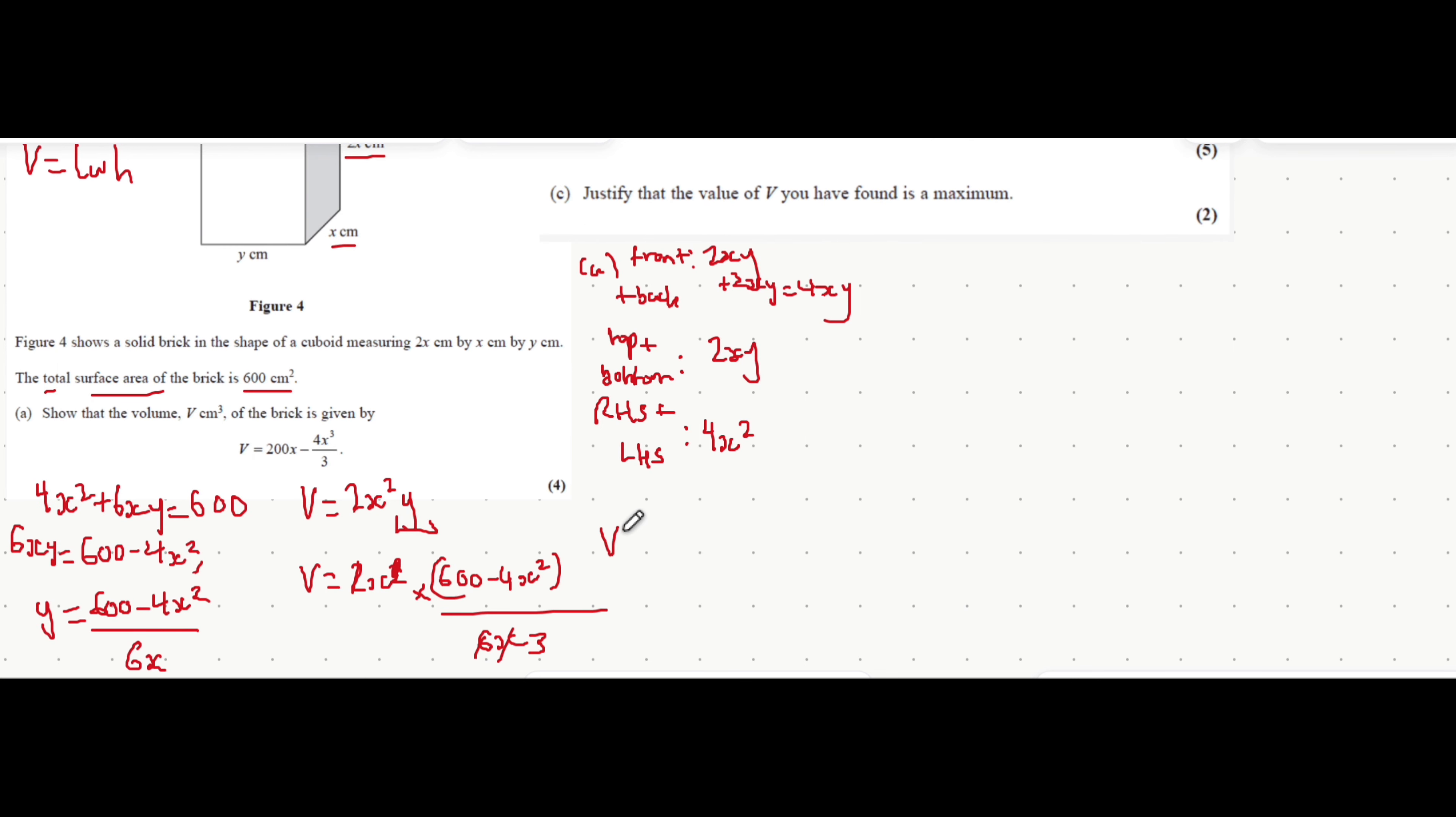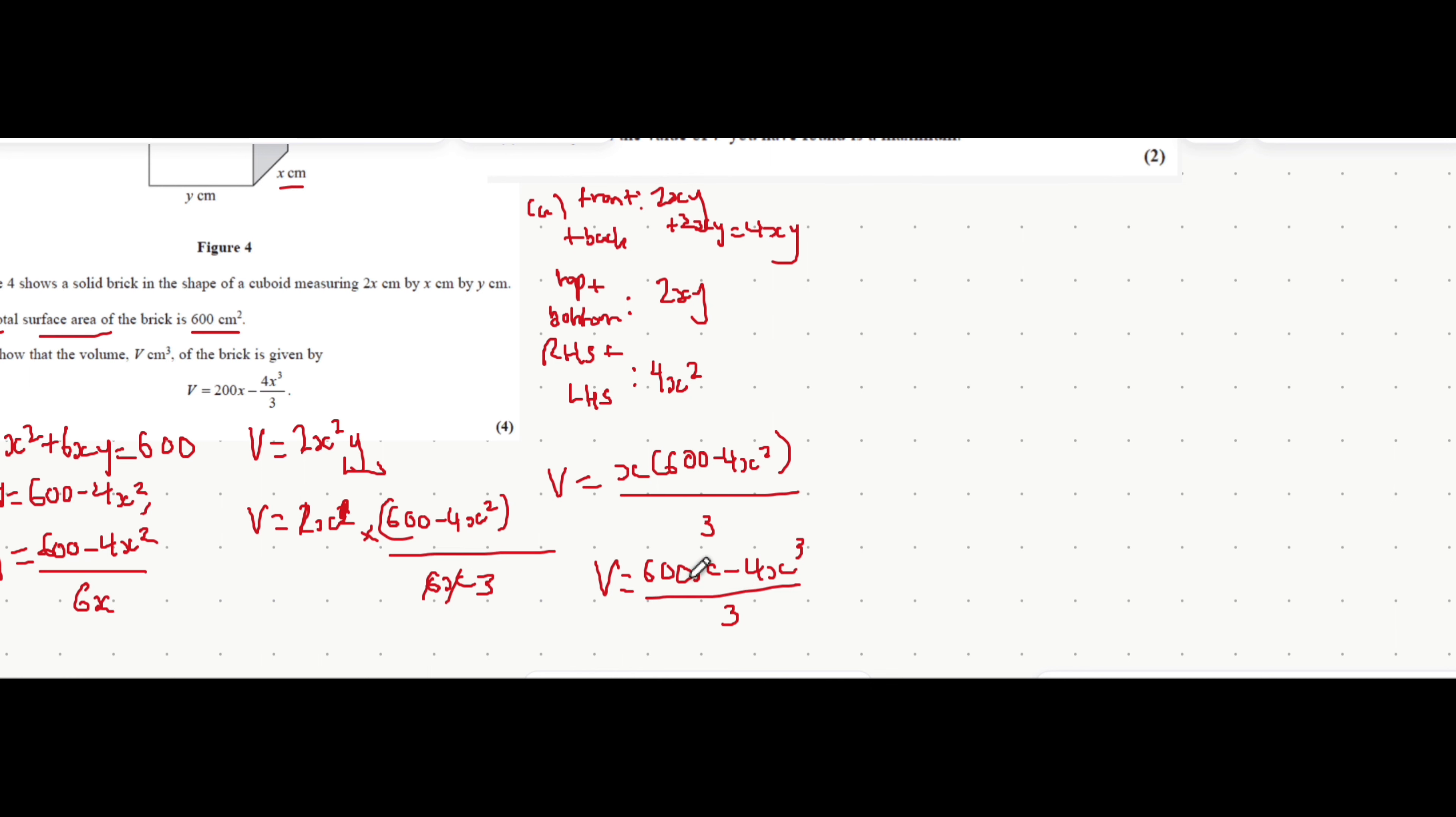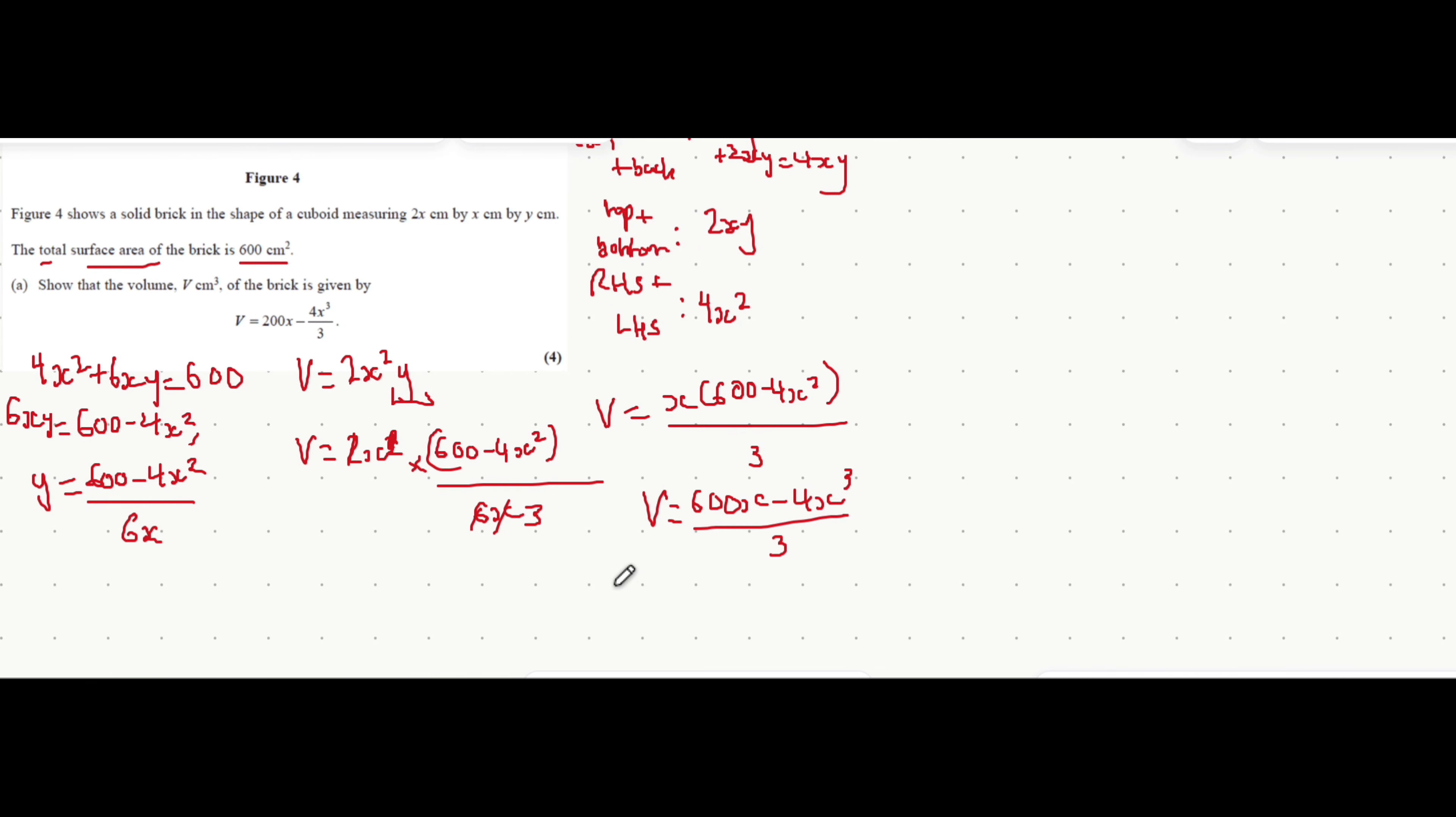Let's write this out. x multiplied by 600 minus 4x squared all divided by 3. Let's expand out the brackets. So the volume is 600x minus 4x cubed all over 3. We can separate this into two individual fractions. That's 600x over 3 minus 4x cubed over 3. 600 over 3 is just 200, so this becomes 200x. That's what gets you to this equation here: 200x minus 4x cubed over 3.